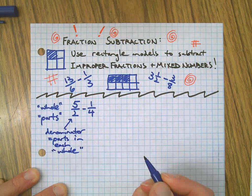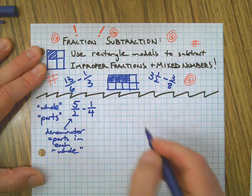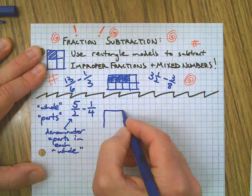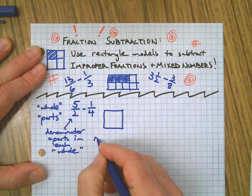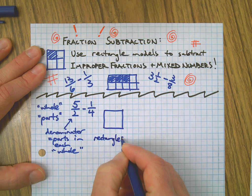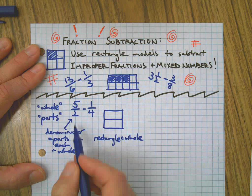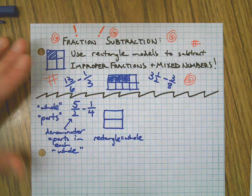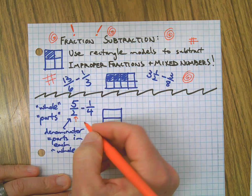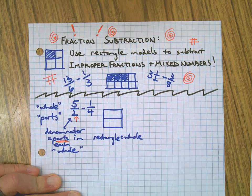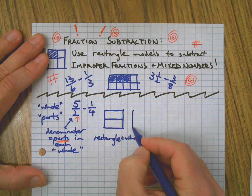So for this example, the first number I'm starting with is five halves. I'm going to make a rectangle — the size doesn't matter, the rectangle equals the whole. The denominator tells me how many pieces are in each whole, which is two.